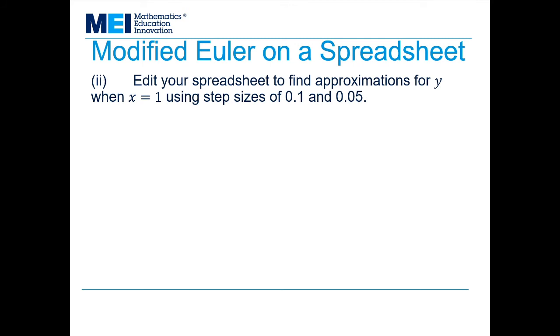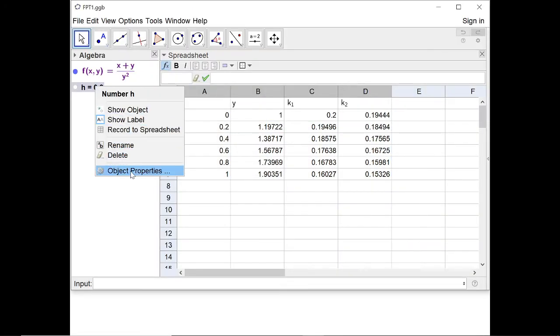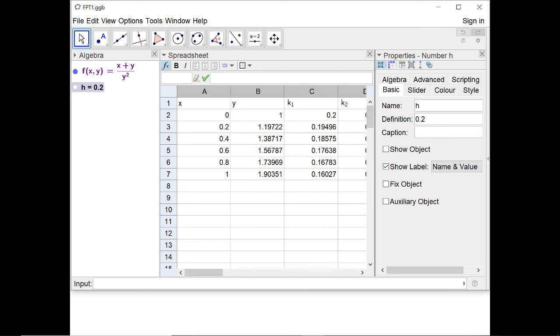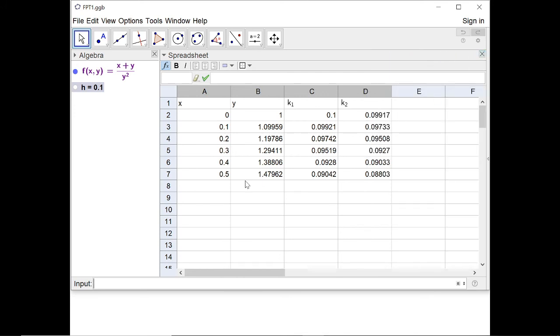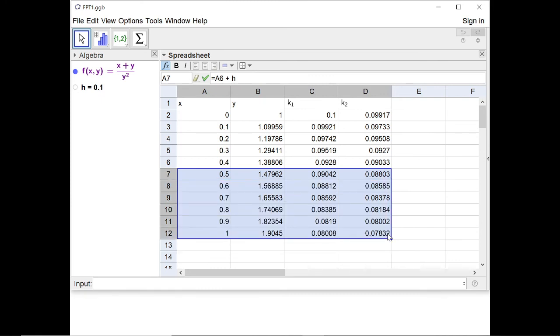Now the next thing I need to do is to edit my spreadsheet for step sizes of 0.1 and 0.05. So I can edit h from 0.2 take it down to 0.1. And then I'll need to fill down a little bit further. So when x is 1, y is 1.90450.